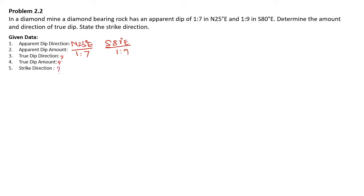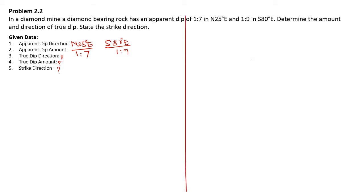The given data: apparent dip direction north 25 degrees east with amount 1 is to 7, and another apparent dip direction south 80 degrees east with amount 1 is to 9. We have to find out the true dip direction, true dip amount, and strike direction. Let me first plot our north-south-east-west lines.